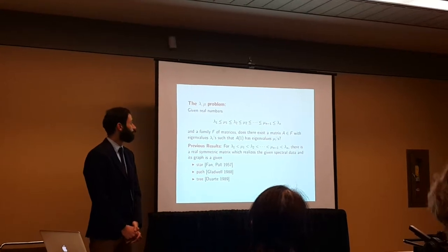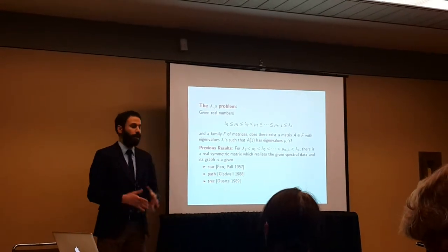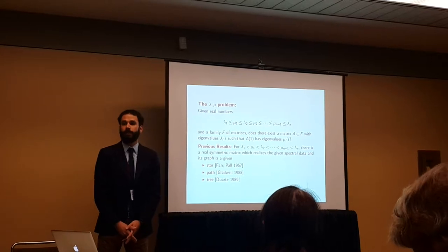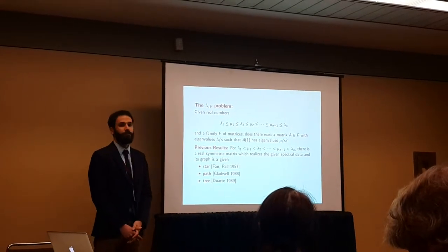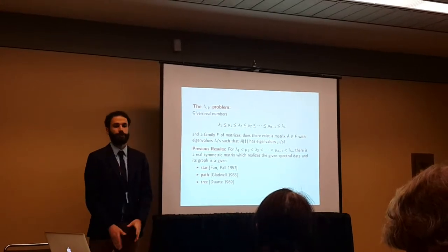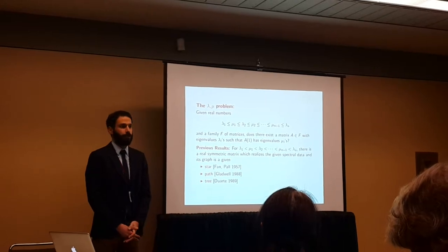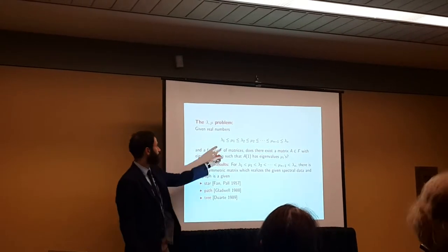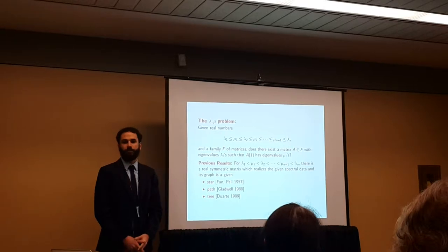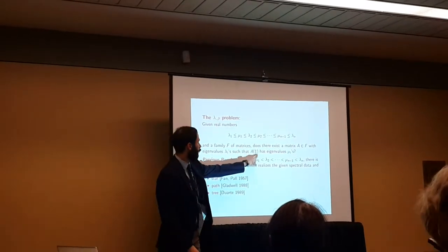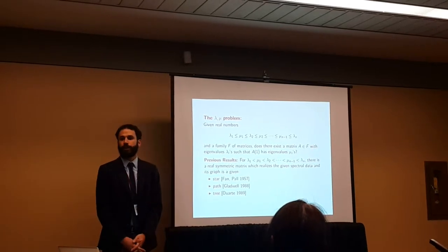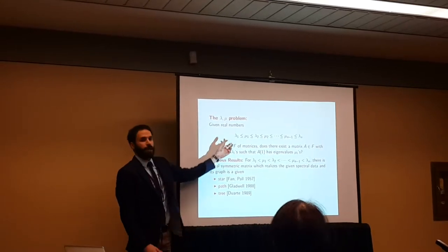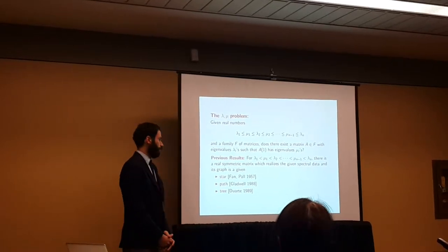What is the problem that we're interested in? Here I have a lambda-mu problem. We have a set of real numbers lambda_1, mu_1, lambda_2, mu_2, lambda_{n-1}, and lambda_n, which have this relation as mentioned here, and we have a family of matrices F. Most of the time, I'm going to talk about this family being the family of real symmetric matrices. Then, we want to figure out if there is a matrix in this family that has eigenvalues lambda_i, and when I delete row 1 and column 1 of the matrix, denoted by A(1), it has eigenvalues mu_1, mu_2, mu_{n-1}.